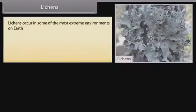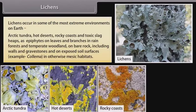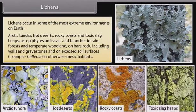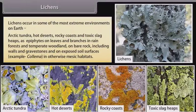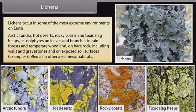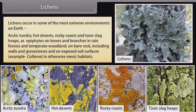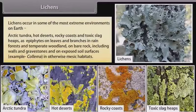Lichens occur in some of the most extreme environments on Earth: Arctic tundra, hot deserts, rocky coasts, and toxic slag heaps — as epiphytes on leaves and branches in rainforests and temperate woodland, on bare rock including walls and gravestones, and on exposed soil surfaces in otherwise harsh habitats.